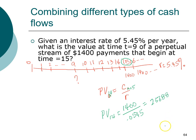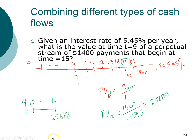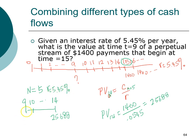Once we have that, the rest of the problem is easier. We now have an investment problem: how much is $25,688 — which is in year 14 — worth as of year 9? The investment horizon is the time between year 9 and year 14, which is five years (14 minus 9). The interest rate is 5.45%. Since year 9 is the beginning of this horizon, we're finding the present value.